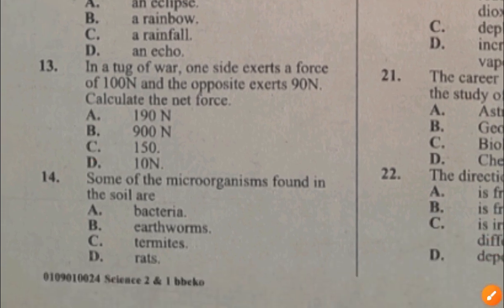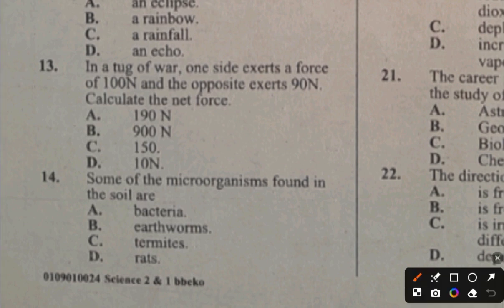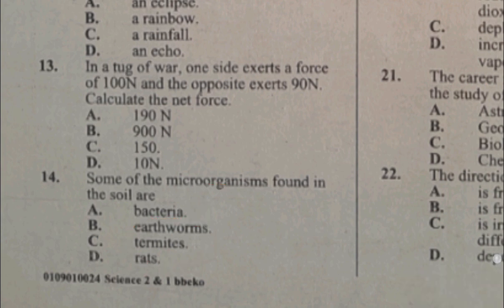Question 14. Some of the microorganisms found in the soil are: A. Bacteria, B. Earthworms, C. Termites, D. Rats. The question asks for micro-organisms — small organisms that cannot be seen with the naked eye. Earthworms, termites, and rats are all macro-organisms. The answer to question 14 is A, bacteria.